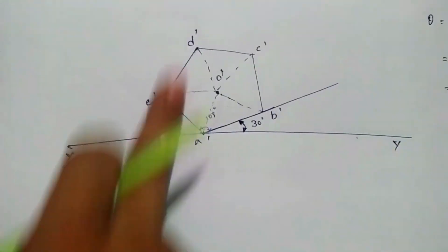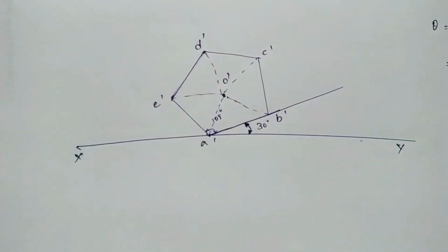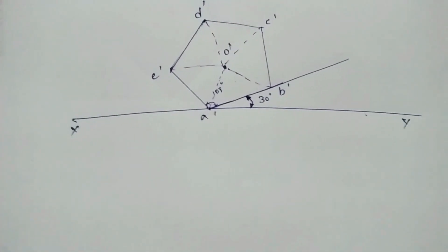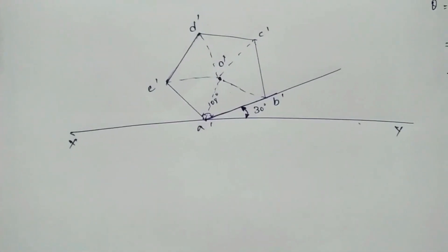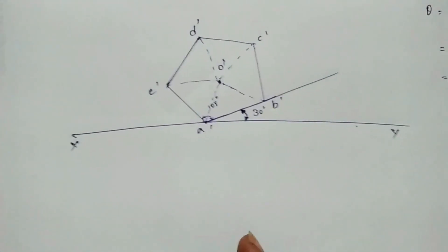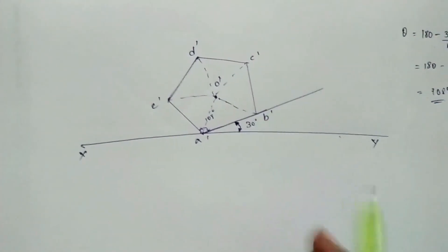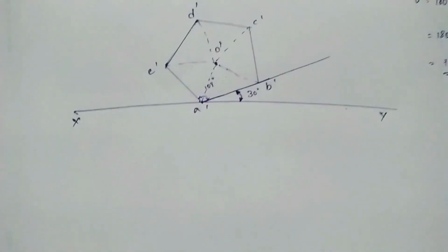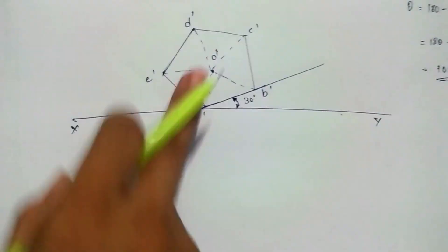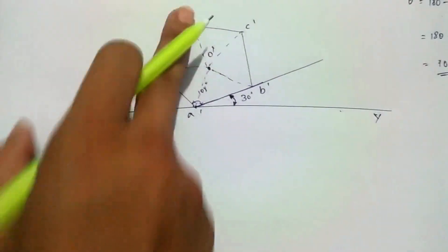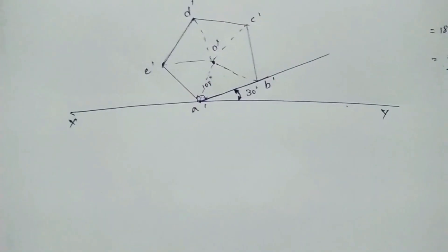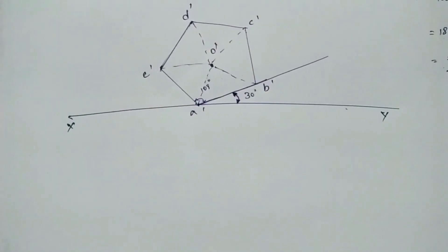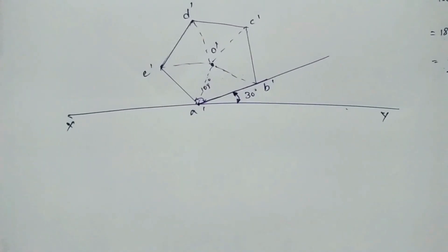If you place the pentagon and do the projection, you can write the pyramid in a vertical area. I can draw the points in the vertical area.